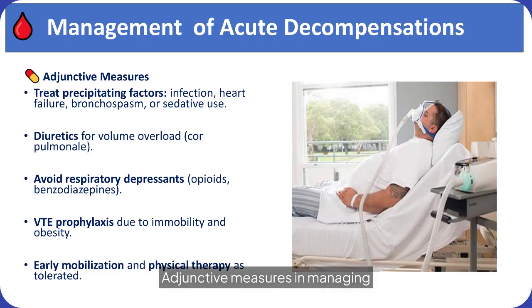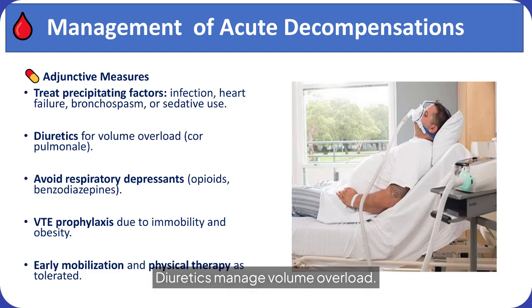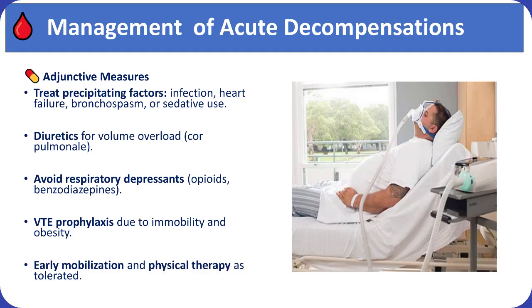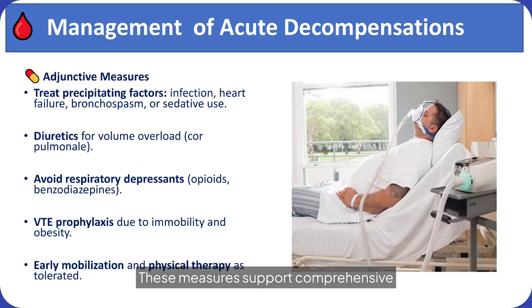Adjunctive measures in managing acute decompensations include treating precipitating factors like infection and heart failure. Diuretics manage volume overload. Avoiding respiratory depressants is crucial. VTE prophylaxis and early mobilization help prevent complications, supporting comprehensive care for OHS patients.